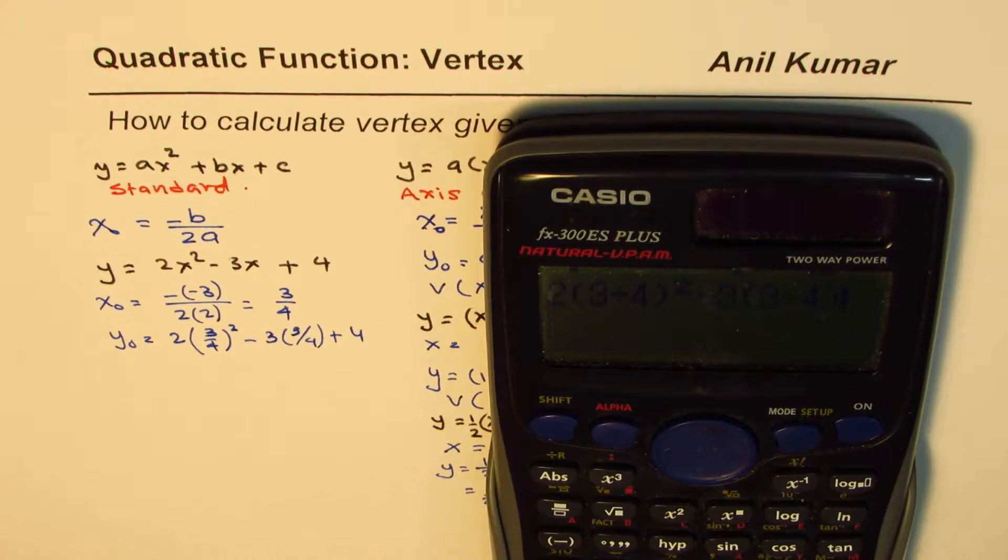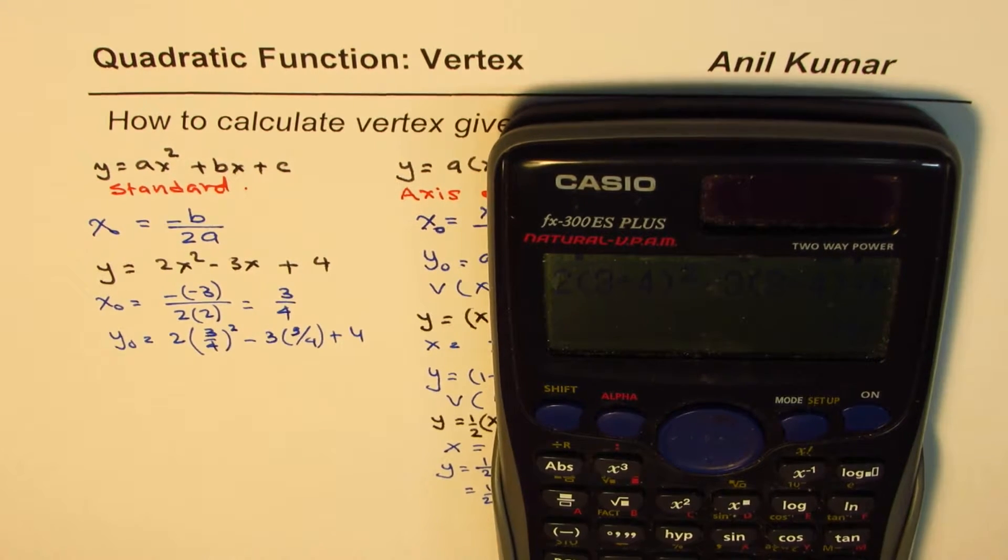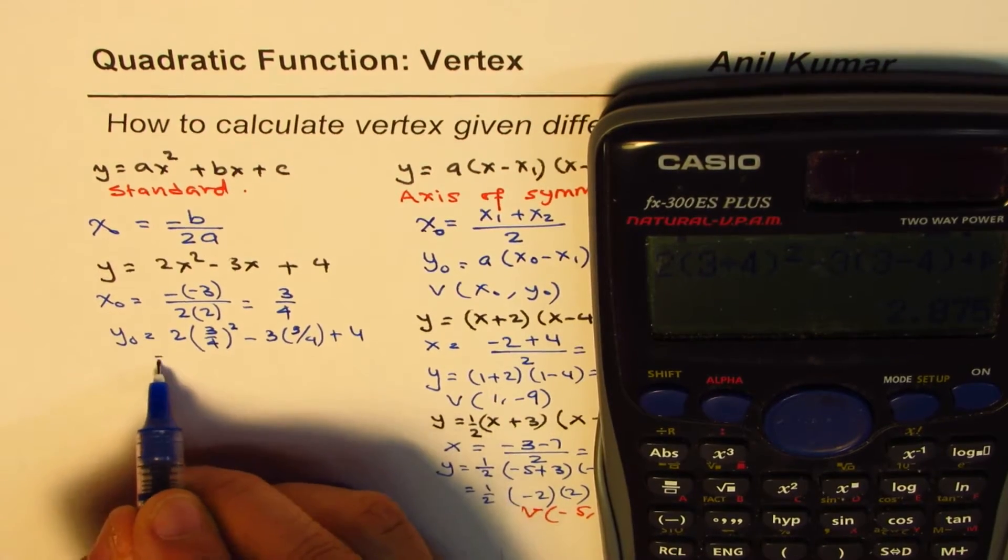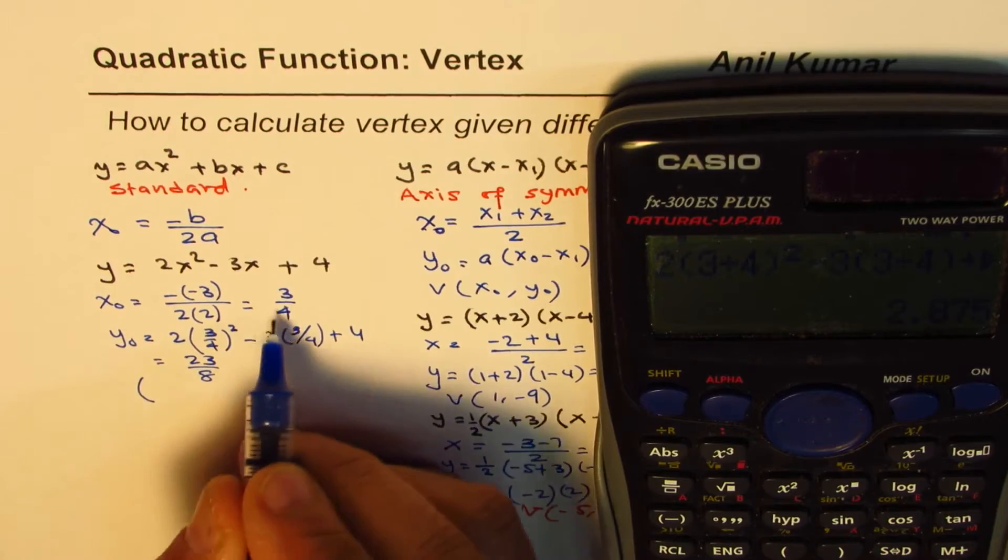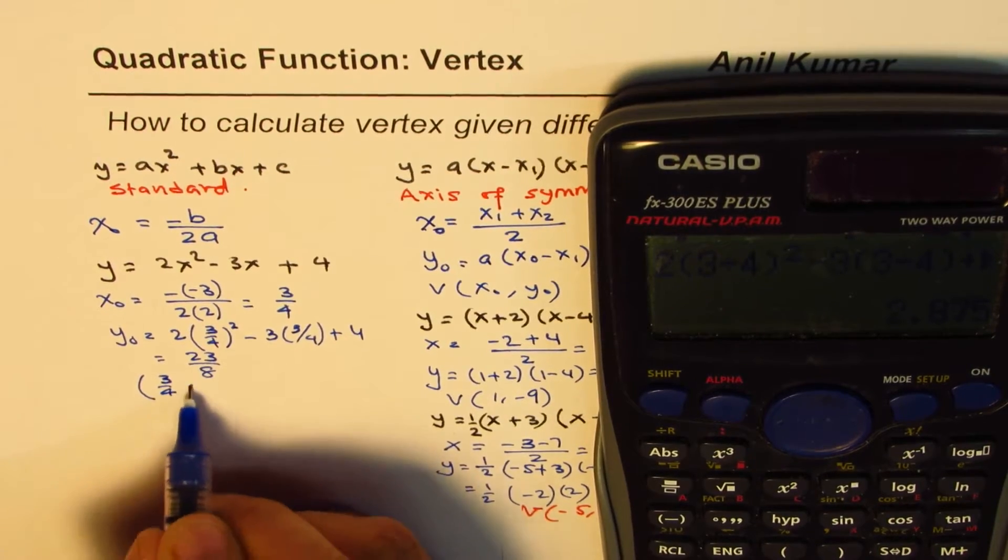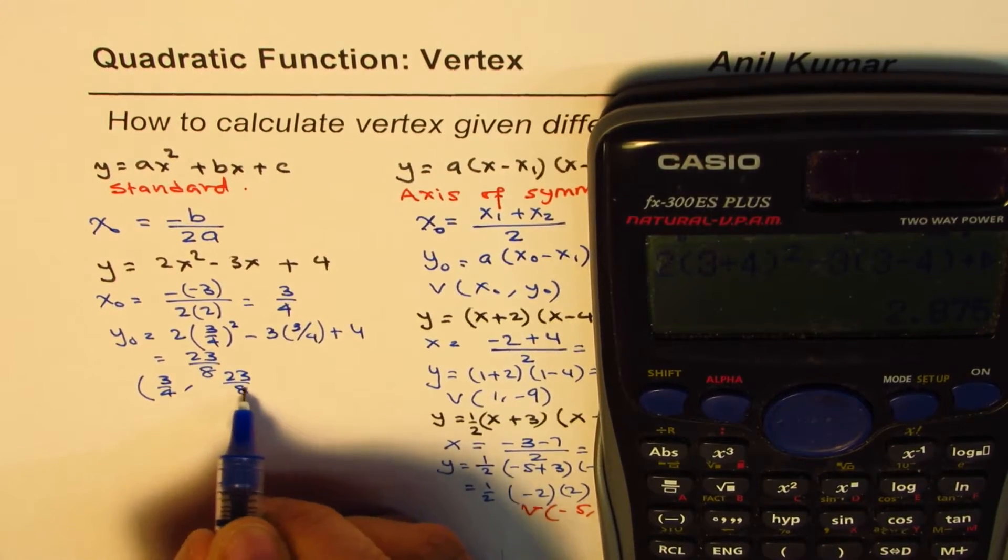So we do 2 times within bracket 3 divided by 4 bracket close square minus 3 times within brackets 3 divided by 4. And then we have plus 4 equals to 23 over 8. You could write in decimals also. So we have, let me write 23 over 8. So the vertex will be at 3 over 4, 23 over 8.